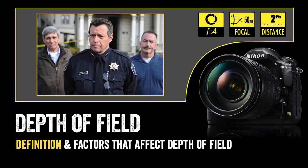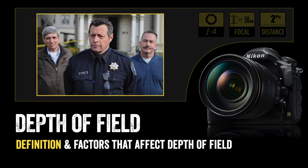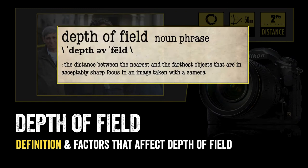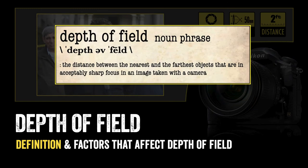Let's start with the definition of depth of field. In photography, depth of field is the distance between the nearest and farthest objects that are in acceptably sharp focus in an image taken with a camera.